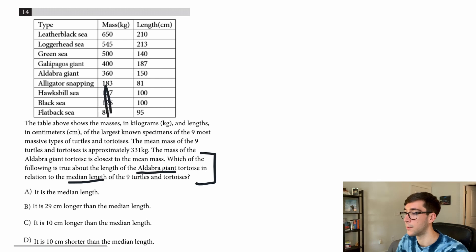So we're looking at length so I can cross off all of this. A lot of times they give you extra information just to confuse you. We know we're talking about the Aldabra giant, so I'll just note 150 over here. And now we're looking for the median.